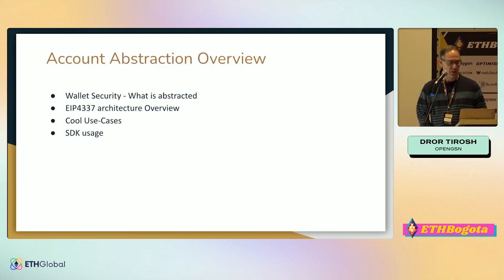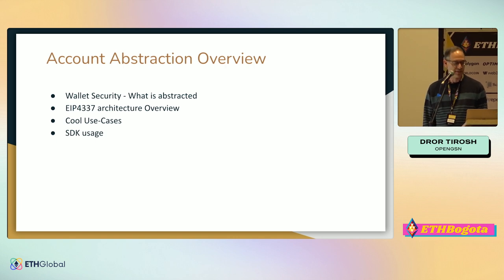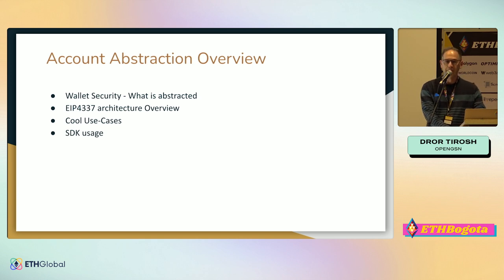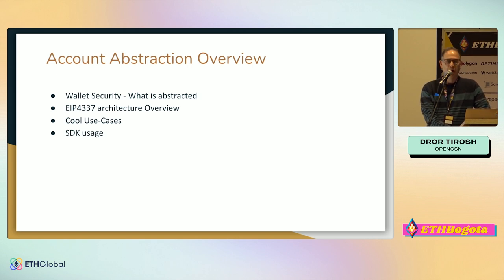I will go with a brief overview of what account abstraction is, what we abstract, security, the architecture of our implementation of EIP-4337, some cool features we think can and should be built above it, and then I will go into the SDK we have, how to use it, and how to use this API to create a wallet.